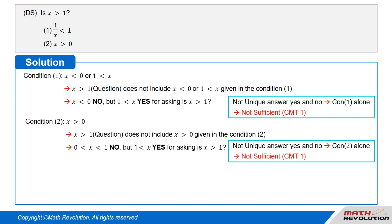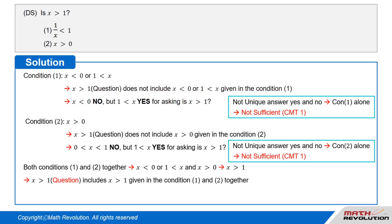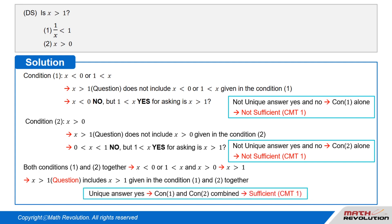If both conditions are put together, we have x is smaller than 0 or x is greater than 1 (from condition 1), combined with x is greater than 0 (from condition 2), which gives x is greater than 1. Thus, the range x is greater than 1 that we are trying to find is exactly the range that results from combining conditions 1 and 2, so both conditions together are sufficient.